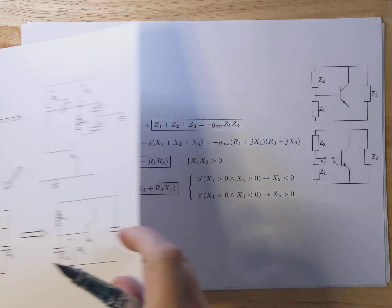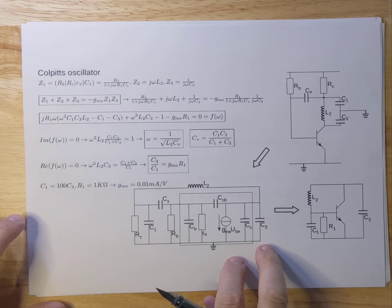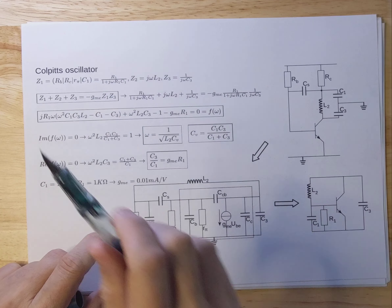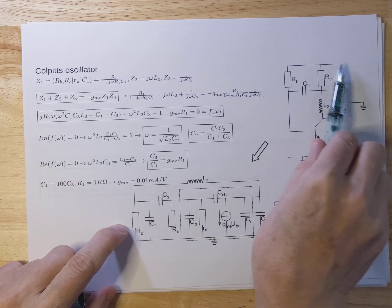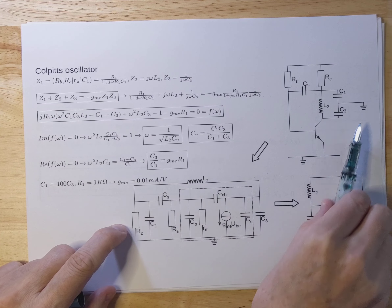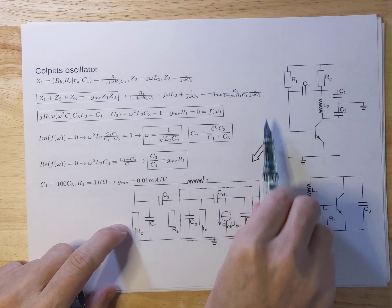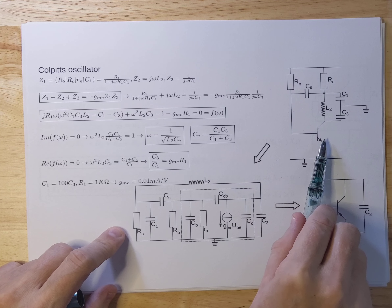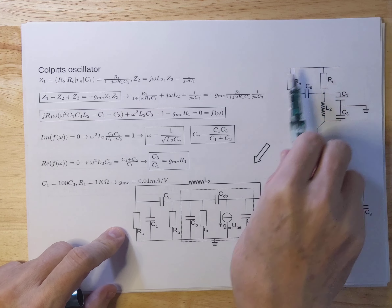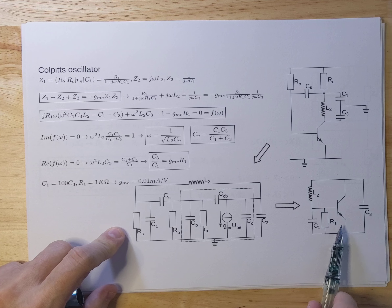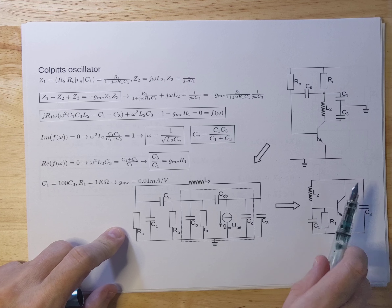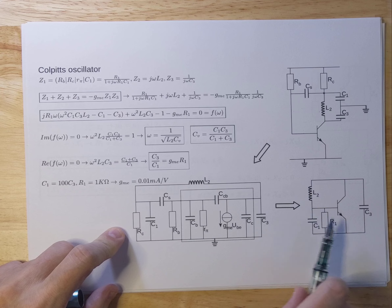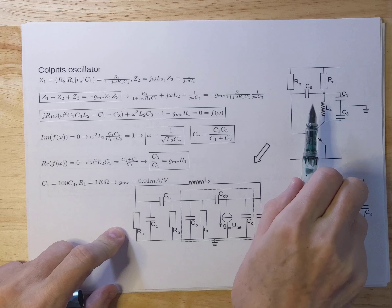Now let's look at an implementation. I picked a Colpitts oscillator, which as you already saw on the first slide looks something like this in its most basic implementation. How do we get from this circuit to the small signal schematic on which we actually executed the calculations? Let's take a look at the small signal representation of this circuit.